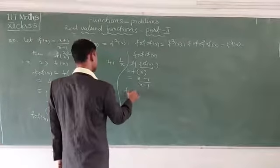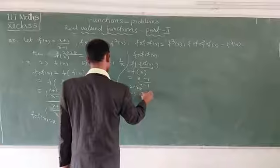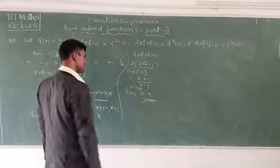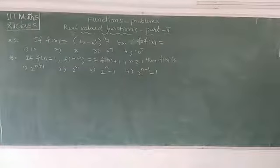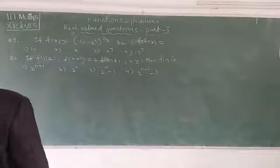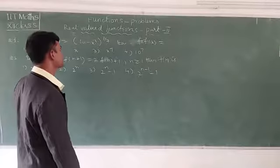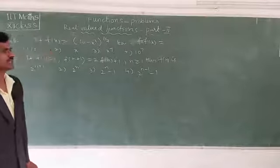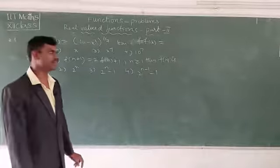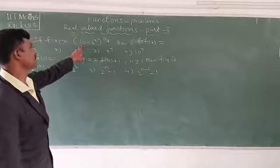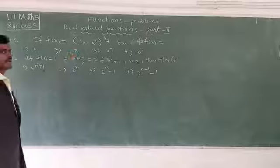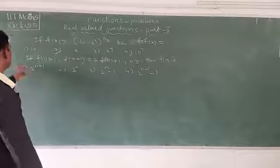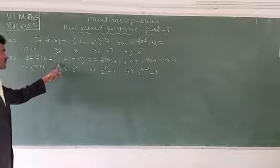Problem 21: If f(x) = (10 - x^7)^(1/7), then find f∘f(x). You can try this at home. The answer is the second option, which is x.